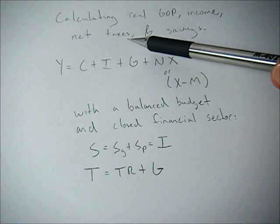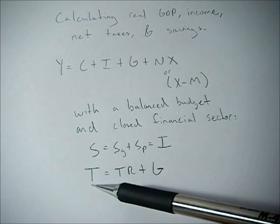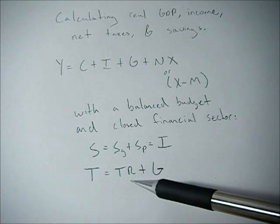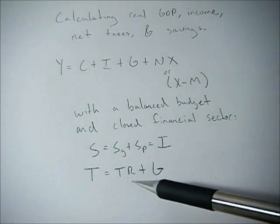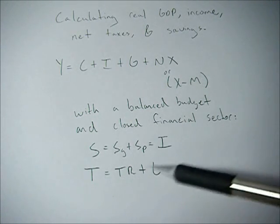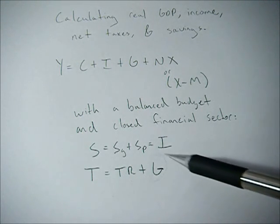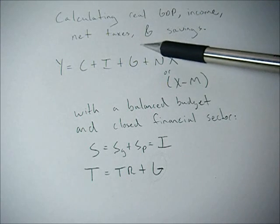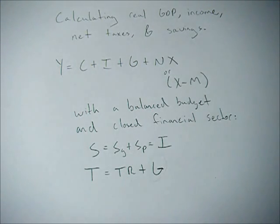So if we want to find net taxes, net taxes is equal to taxes minus transfers because we're taking taxes from people, but then we're giving money back to people. So the net tax amount is going to be equal to this government spending value or government expenditure. So when we get this G value, you can equate that to net taxes.